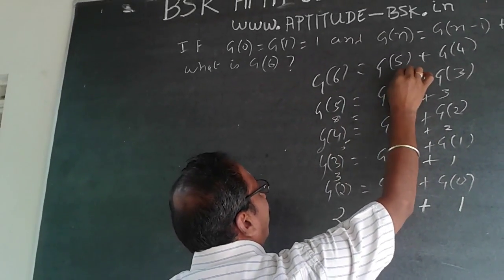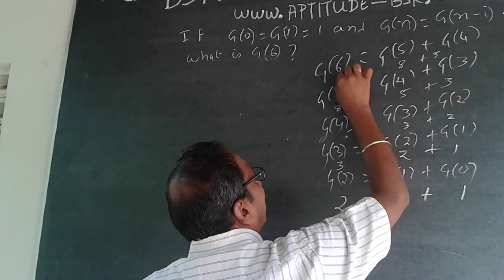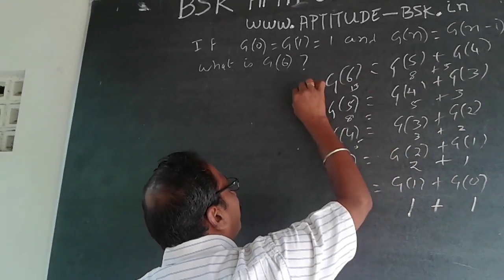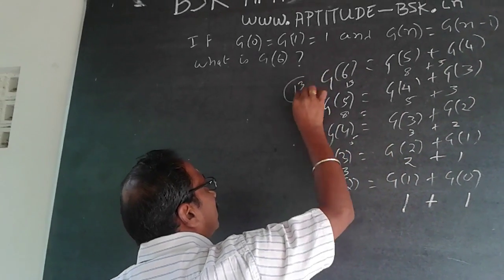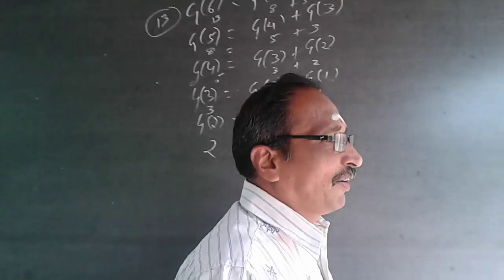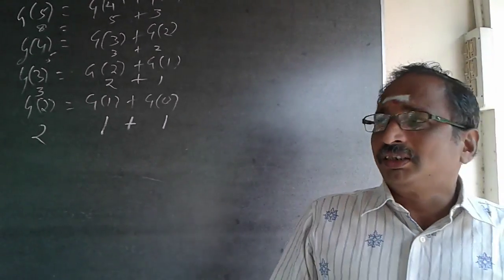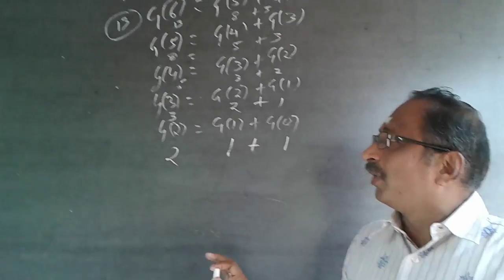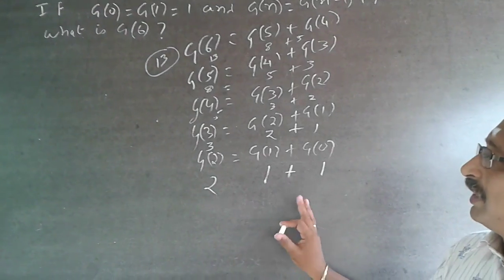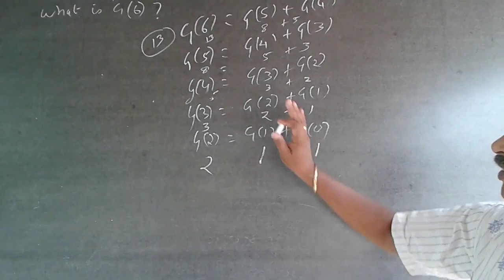g of 5 is 5 plus 3 equals 8, and 8 plus 5 will be equal to 13. So g of 6 is 13. That is the way of doing it.